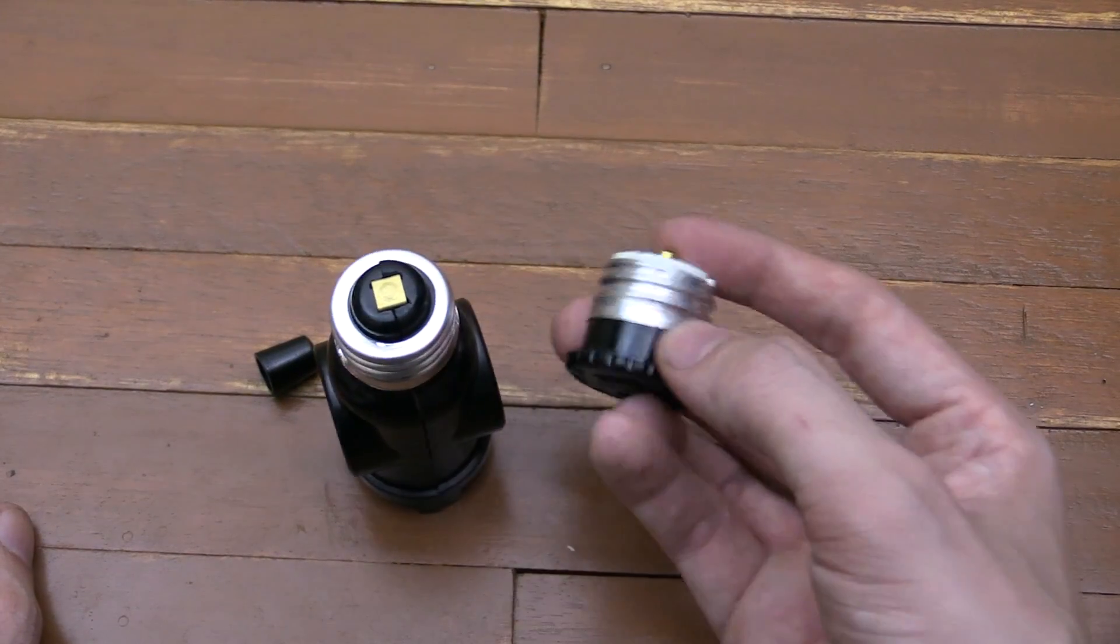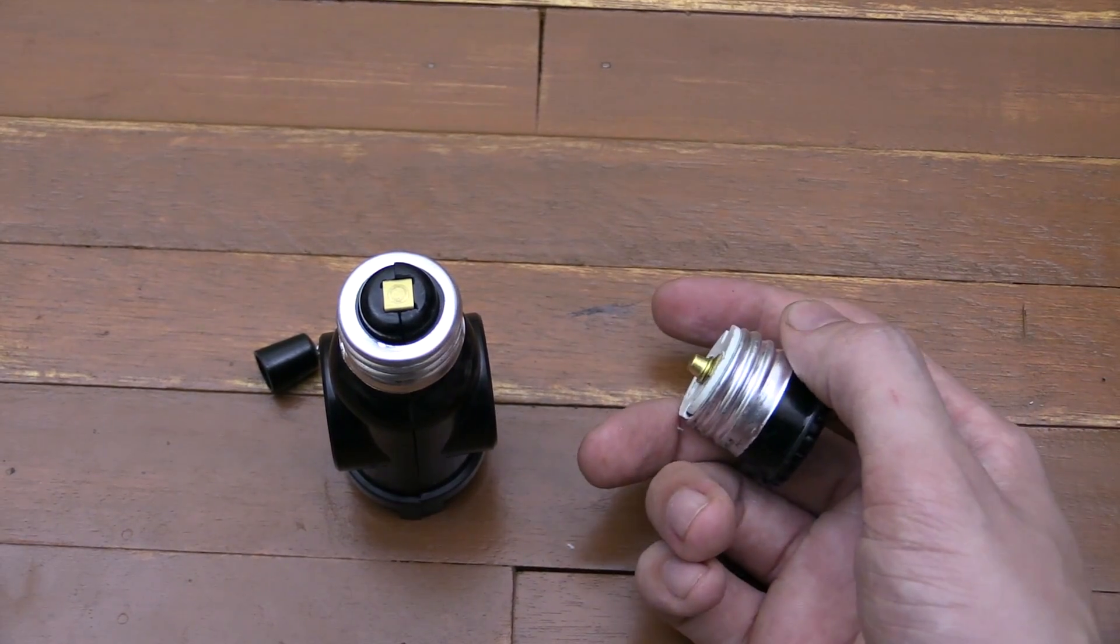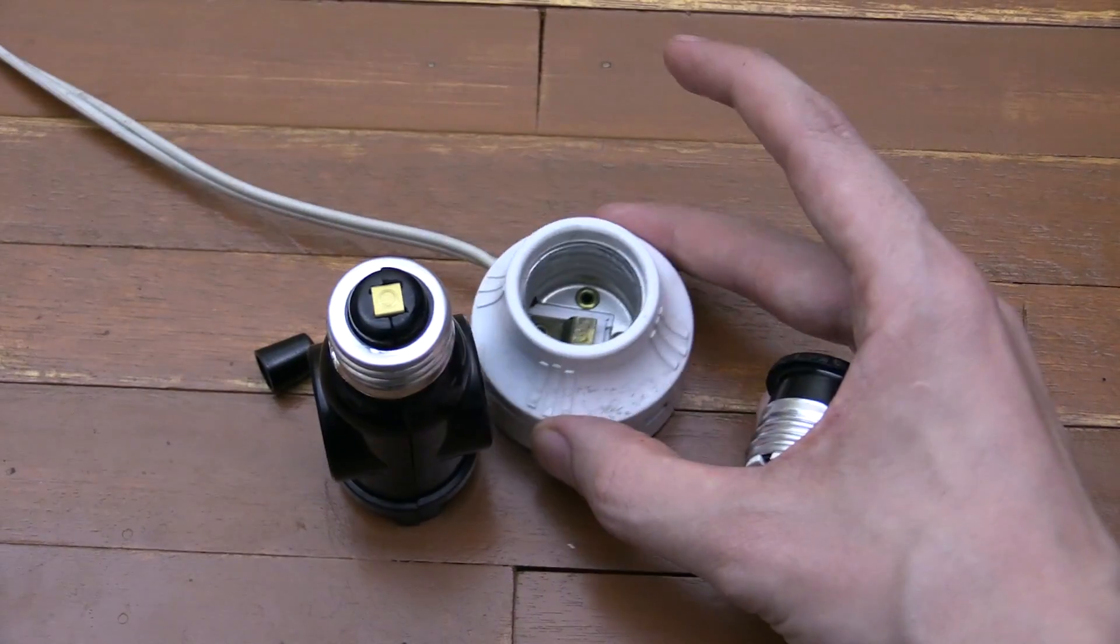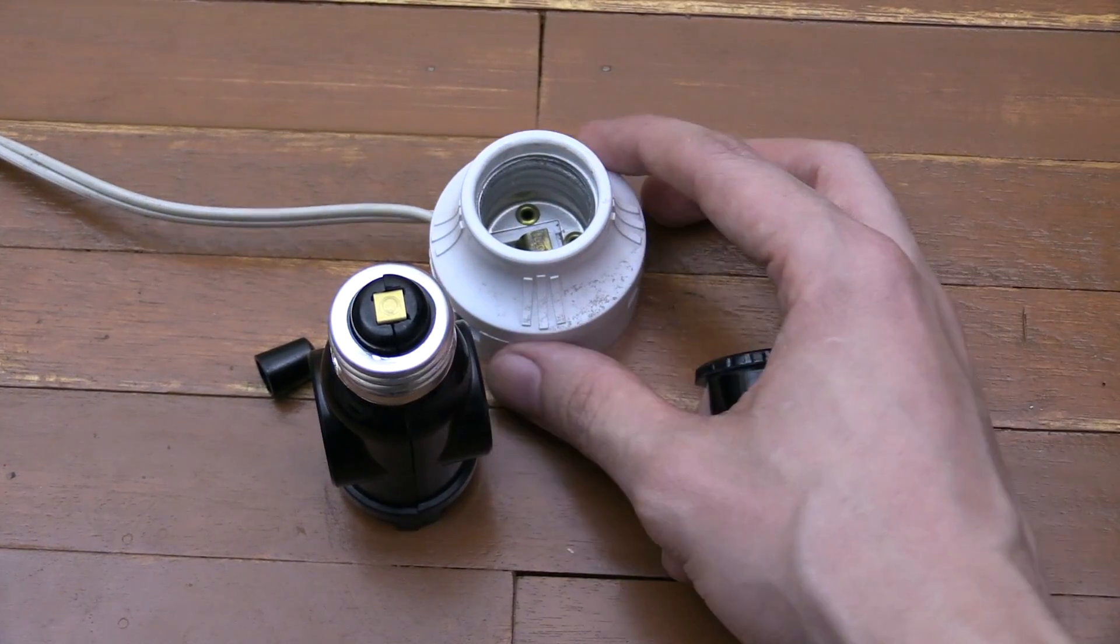Now usually you would unscrew the bulb from say a side lamp or the ceiling but for today's experiment we're just going to use this test rig because it's much easier to shoot here on my table than to try and point the camera at the ceiling.